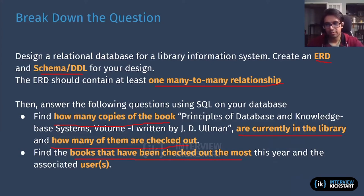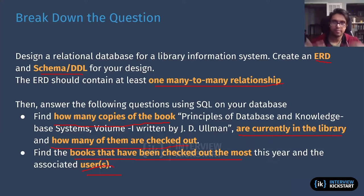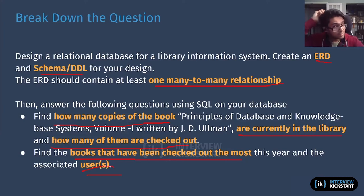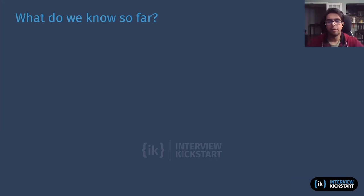The second question is to find the books that have been checked out the most. So we're going to be tracking how many times a certain book has been checked out and their associated users — who's checking out books. That tells me I'm probably going to be keeping track of members and people who are actually checking out these books. As you can see, looking into the actual SQL questions is giving us our requirements for what our design is going to be like. Our requirements haven't been given directly to us, but we're teasing them out from the information we've been given.